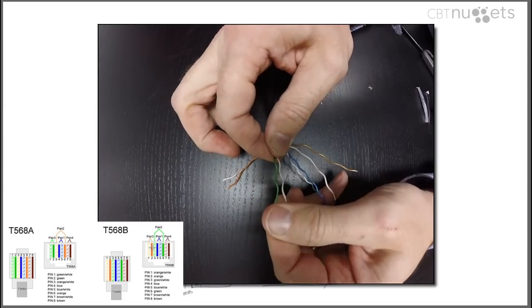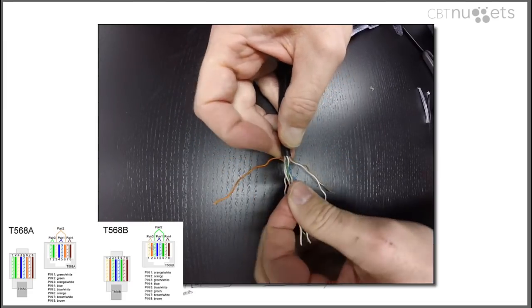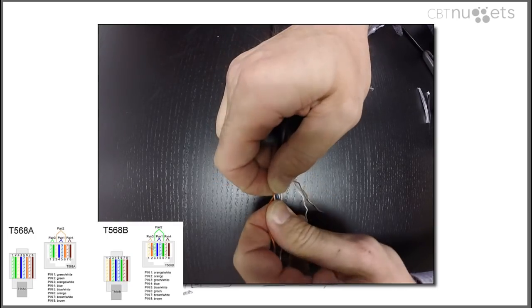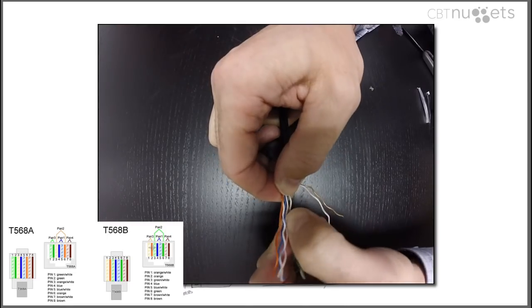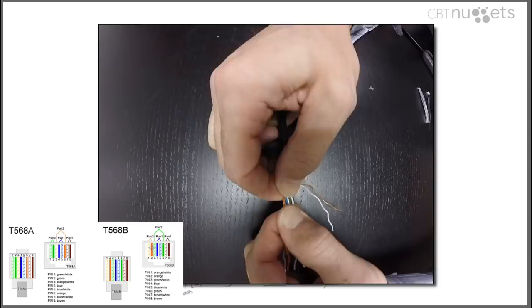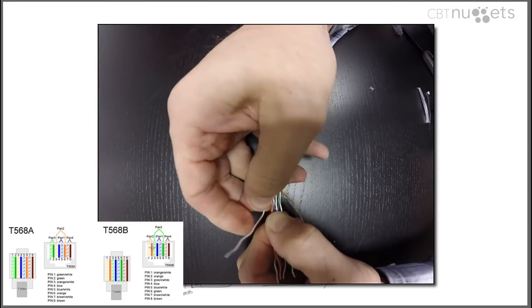I'm going to match that: green stripe, green, orange stripe, blue, blue stripe, orange. They're starting to fight me because of all the twists. You're going to have to kind of wiggle these things out and keep them straight. Brown stripe, brown.